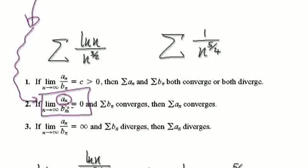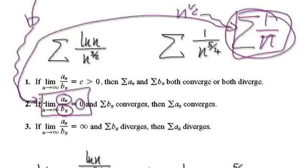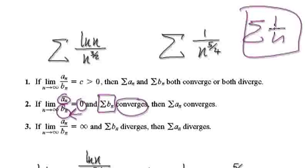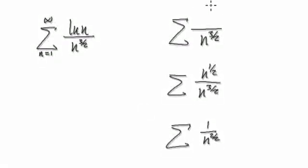If you get AN divided by BN and it tends to zero, the theorem says: if BN converges, then AN must also converge. But here, BN — which is 1 over n — diverges, so that's not going to help us. For case two, we need BN to converge. If BN diverges, AN could converge or diverge — it tells us nothing. So selecting n to the power of a half is useless here.